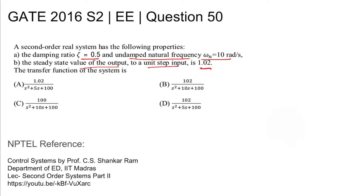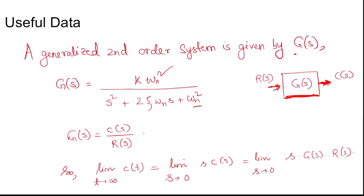For reference, you can refer to the NPTEL lecture on second order systems part 2 from the control systems course by Professor C.S. Shankar Ram, Department of Engineering Design, IIT Madras. A second order generalized system transfer function is given by kωₙ² divided by s² + 2ζωₙs + ωₙ², where ωₙ is the undamped natural frequency, k is the open loop gain, and ζ is the damping ratio.